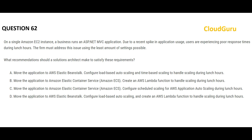Please pause the video here to read this question carefully. You have an EC2 instance running an ASP.NET MVC application. During lunch hours, people are seeing a spike in application usage — for example, from 100 concurrent users to 5000. Because of that, users are experiencing poor response times. You have to address this problem with the least amount of settings.